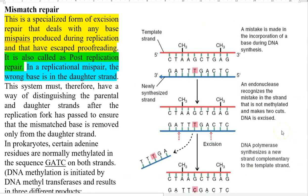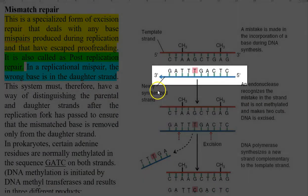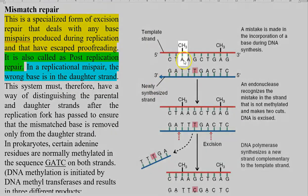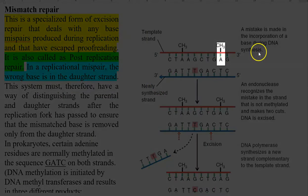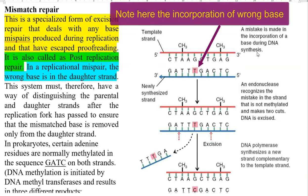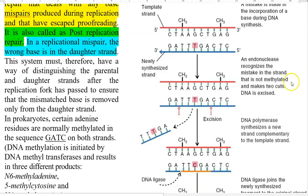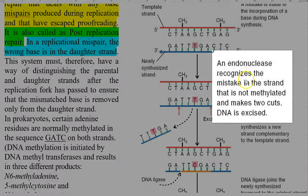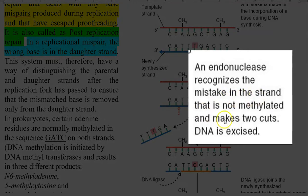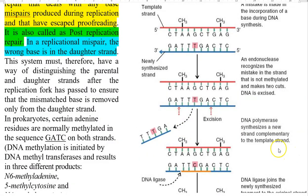Looking at the diagram: the template strand and the newly synthesized strand are shown. In the template strand, the adenine residues have already been methylated. A mistake has been made in nucleotide incorporation during DNA replication — specifically, the incorporation of thymine instead of cytosine. The endonuclease system recognizes the mistake present in the unmethylated strand and makes two cuts, and the DNA is excised. The recognition of the daughter strand is made by the hemi-methylated condition present.